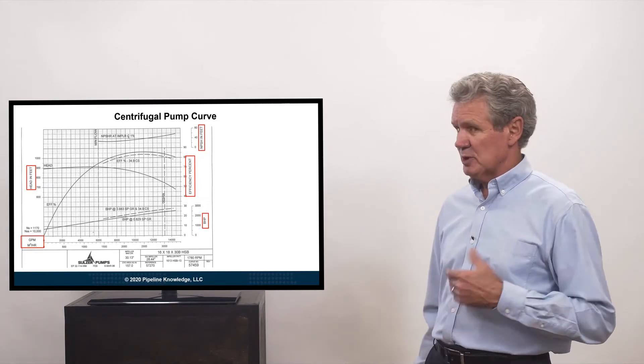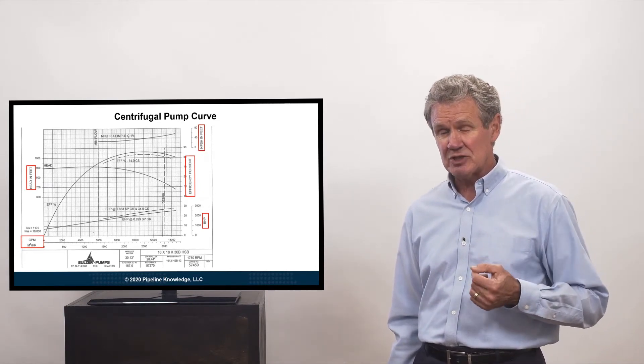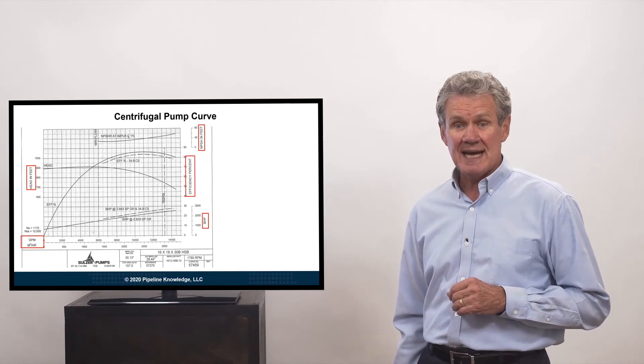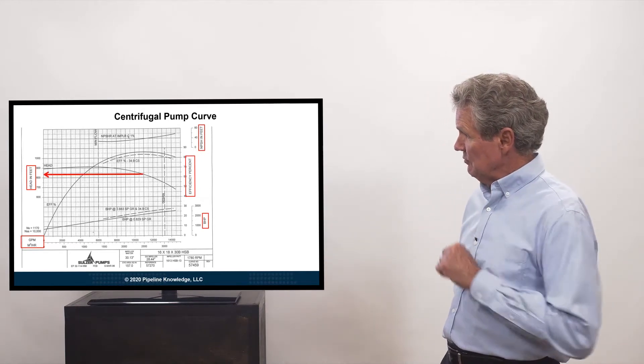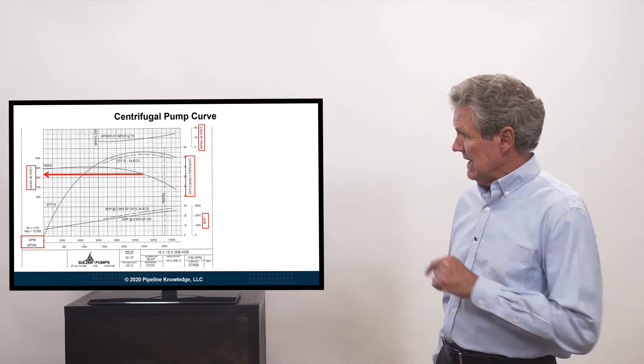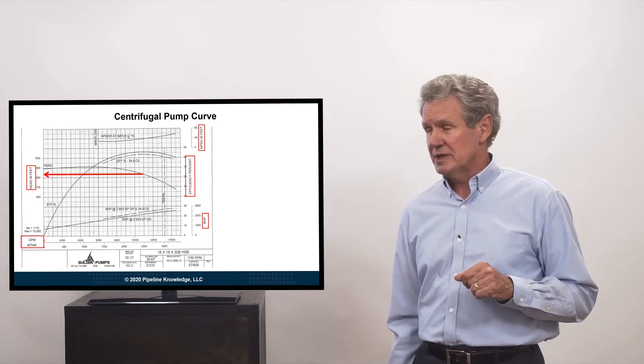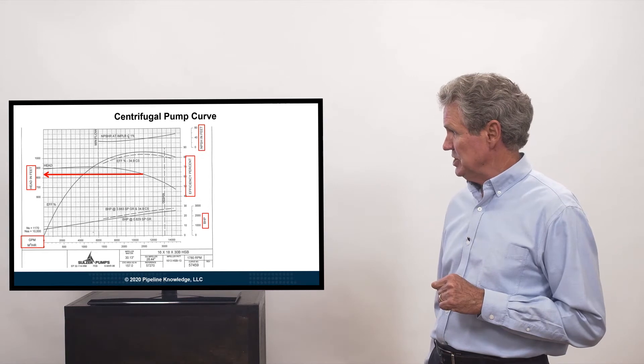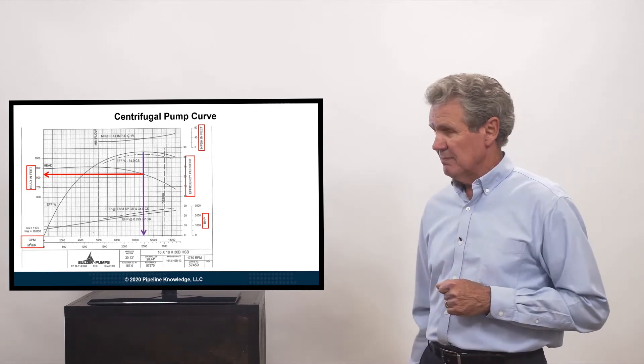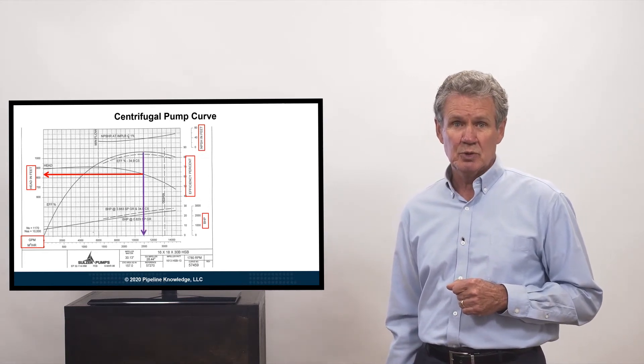So it's a centrifugal pump curve. And let's continue on talking about this curve now that we know what the axes are. So if we want to pump at that amount of pressure where the red arrow is pointing, that's the amount of pressure we need to put in to pump at that rate, the purple arrow.